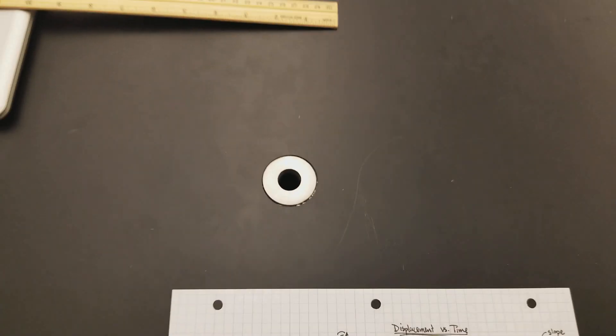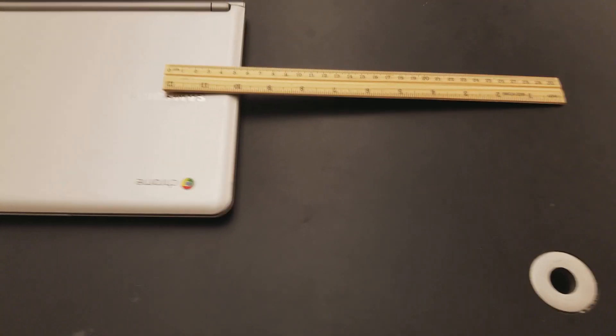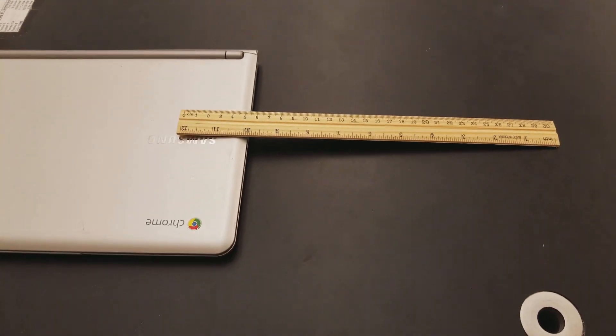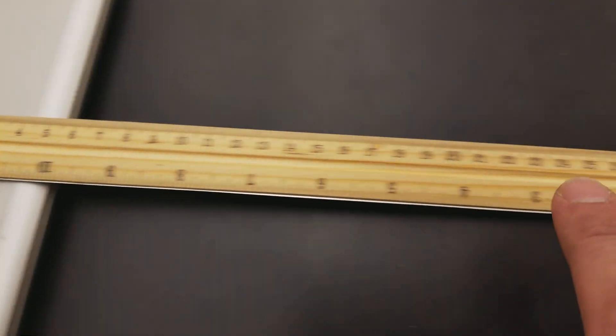Now what I did here for my setup is I'm using a Chromebook because a Chromebook has a pretty low profile. That means this marble is not going to be rolling super fast when it comes off the edge of it. So it's going to roll down my ruler and you see there's a nice groove on that ruler for it to follow.